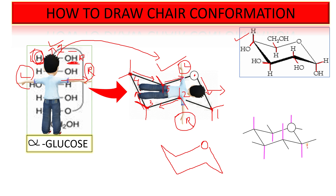For carbon number one, the OH group is on the right side, so we place it downwards. For carbon number two, the OH group is also on the right side, so we place it downwards. For carbon number three, the OH group is on the left side, so we place it upwards.